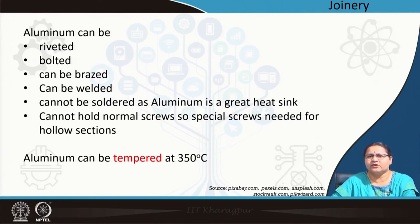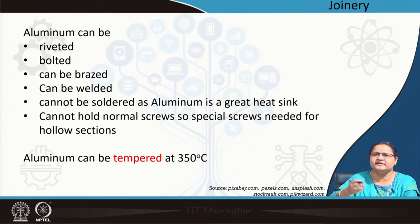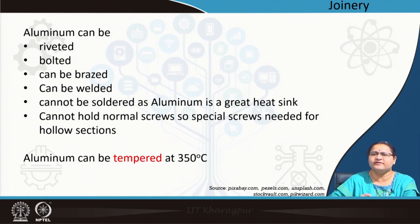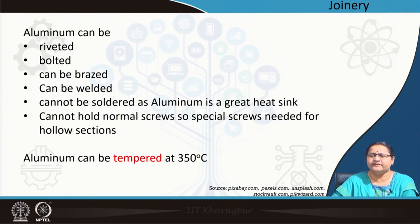What you cannot do easily is soldering, because aluminum is a great heat sink. When soldering at low temperature — around 300°C — the aluminum draws the heat, so you have to keep heating more and more. Since aluminum melts at 660°C, by the time you reach the required temperature, soldering becomes a difficulty. There are ways, but it is usually not recommended.